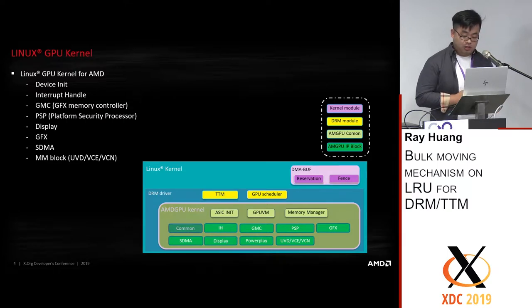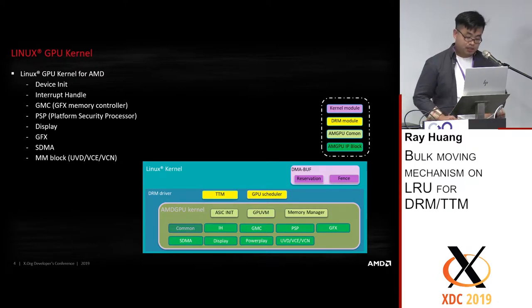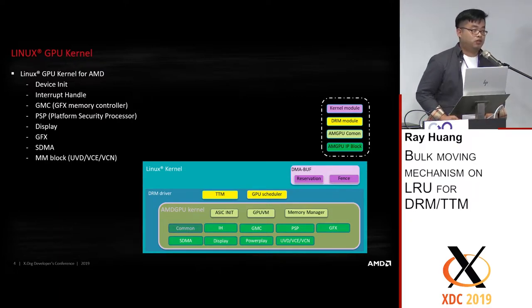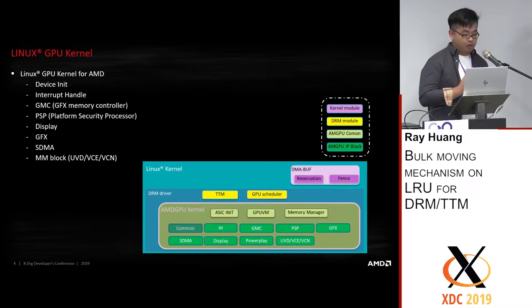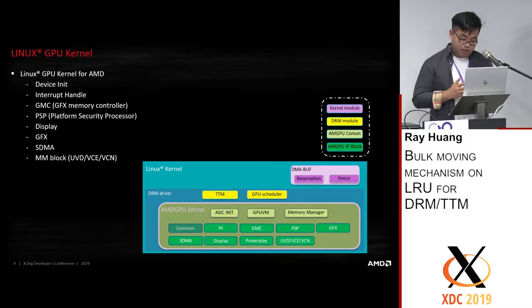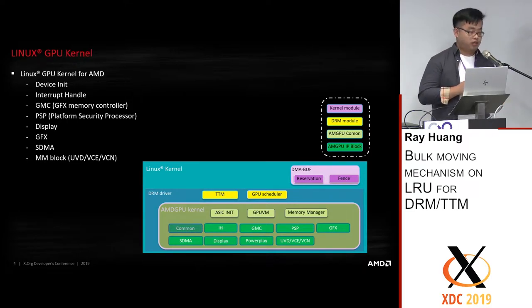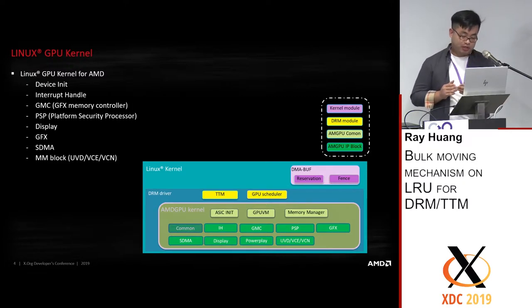The AMD GPU kernel driver is the kernel mode setting driver under the DRM framework. We have components for different functionalities, such as device init. During device init, we perform GPU BIOS posting to make the VRAM available. The next component is GPU VM, where we map the GPU's virtual address to the physical address. Then we have the memory manager and other components.